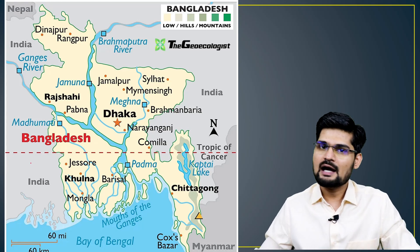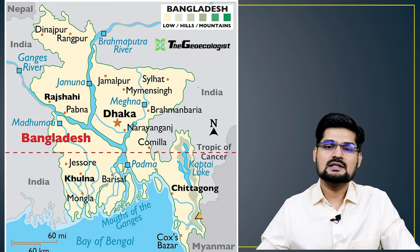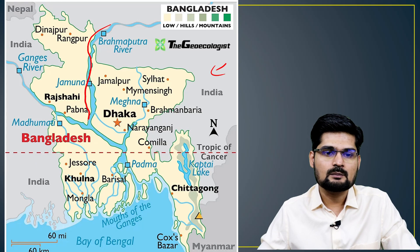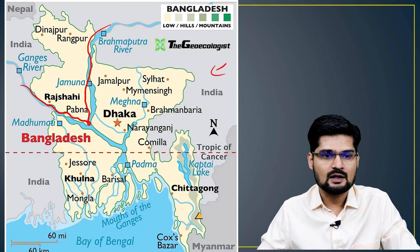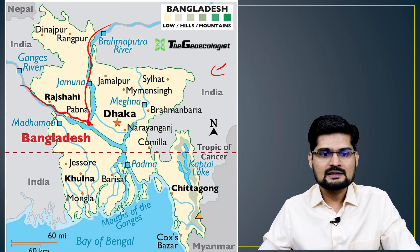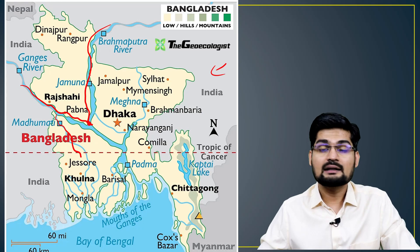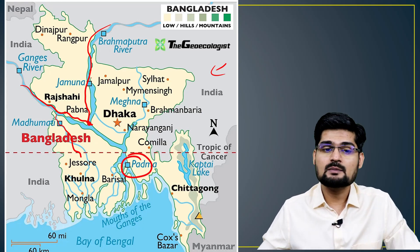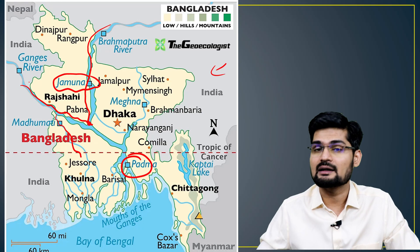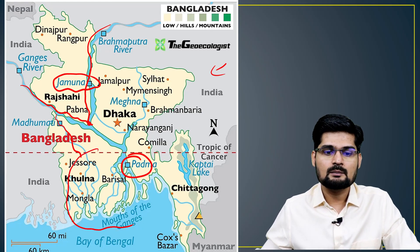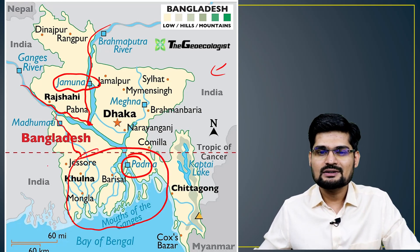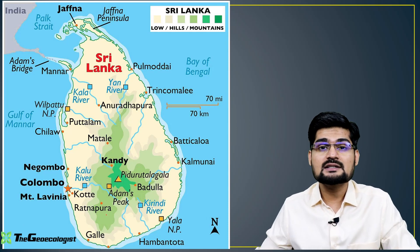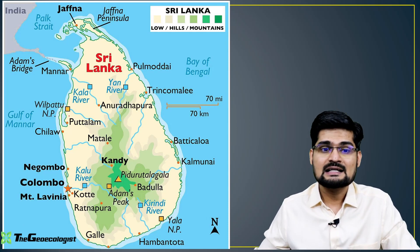Bangladesh has very high population density. The major rivers are the Brahmaputra and Ganga, with branches like the Madhumati. The Ganga is called Padma in Bangladesh, while the Brahmaputra is called Jamuna. Together they form the large Ganga-Brahmaputra delta region.